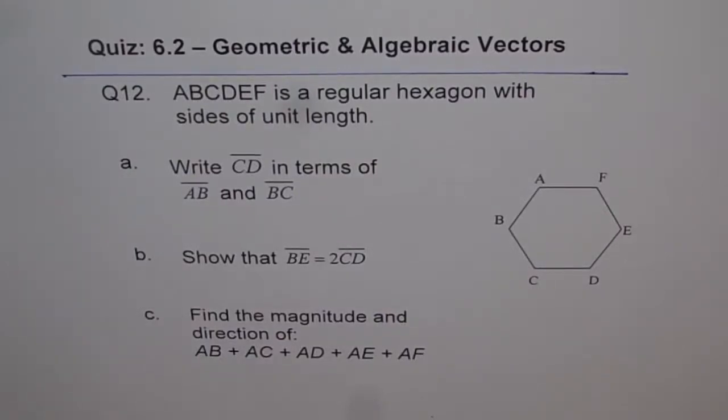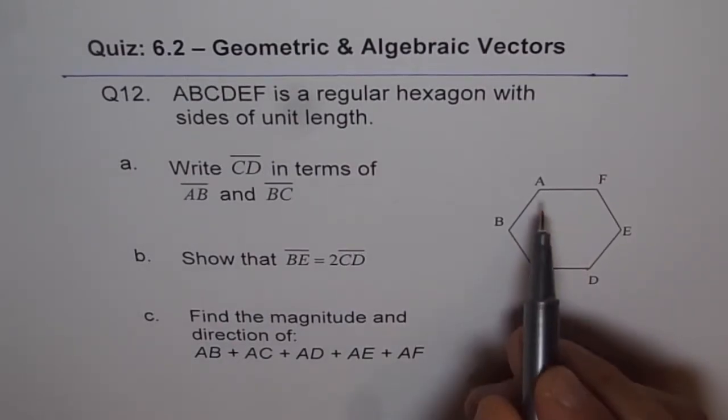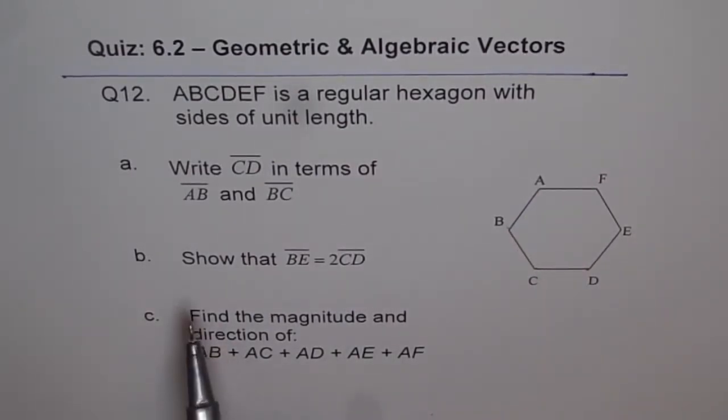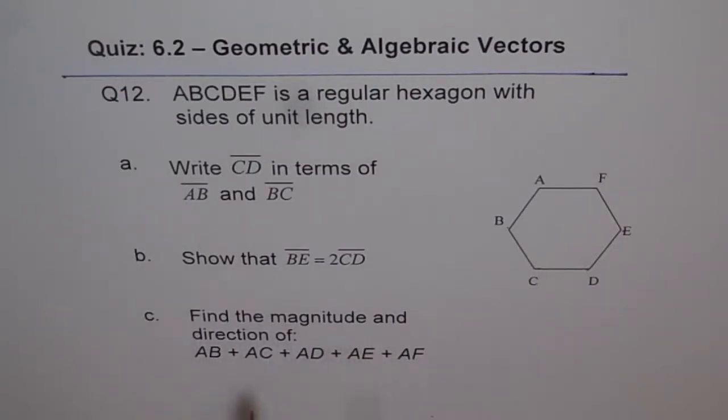Here is a very interesting question, question 12. ABCDEF is a regular hexagon with sides of unit length. Write CD in terms of AB and BC. Show that BE is 2 times CD. In part C, find the magnitude and direction of AB plus AC plus AD plus AE plus AF.